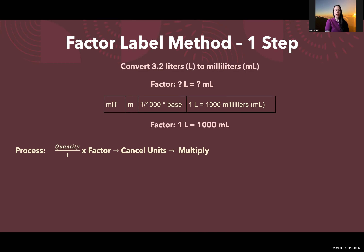We're going to use the process of taking our quantity over one and multiplying it by our factor. That's going to allow us to cancel units. Then we'll multiply to get our final answer.